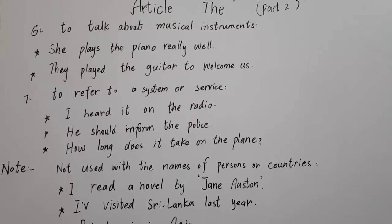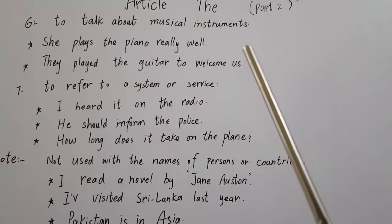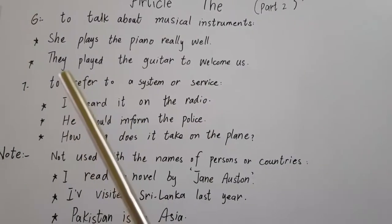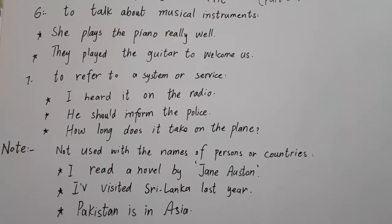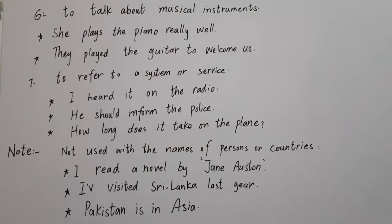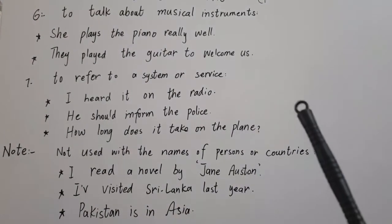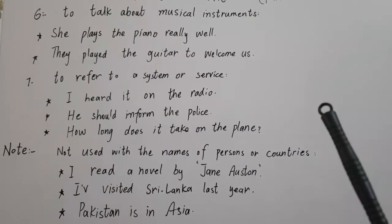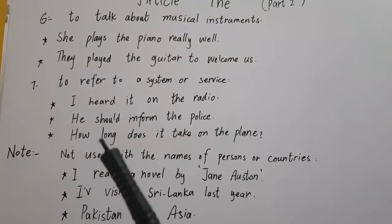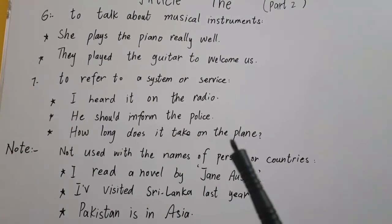Rule number 6: 'the' is used to talk about musical instruments. Before the names of all musical instruments we use 'the'. For example: 'She plays the piano really well.' 'They played the guitar to welcome us.' Rule number 7: we use 'the' to refer to a system or service. For example: the radio, the police. 'I heard it on the radio.' 'He should inform the police.' 'How long does it take on the plane?'